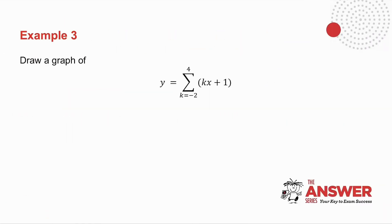Example 3 involves sigma notation in a functions context. Remember that 15% of all your exams are problem-solving questions. Problem-solving questions don't have to be difficult — they just mean the question is unseen. You need to take the work you've been taught, think, and adapt it into an unseen problem. Don't be scared; you know how to do sigma notation. Pause the video, try it, and then we'll do it together.